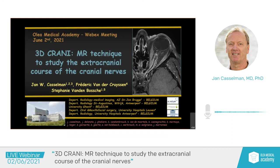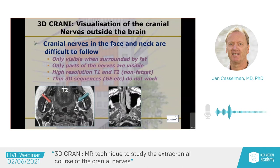What we want to see is cranial nerves in their extracranial course. We all know that cranial nerves are easy to visualize intracranially and also where they leave the skull base. But once you go out of the skull, it gets quite difficult. Most often, you can only see them when they are surrounded by fat, and because not all of the nerve is surrounded by fat, very often only parts of the nerve can be seen. The only technique we had was very often high-resolution T1 and T2, non-fat sat.